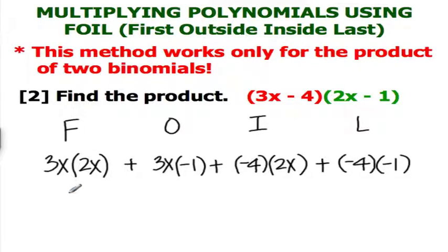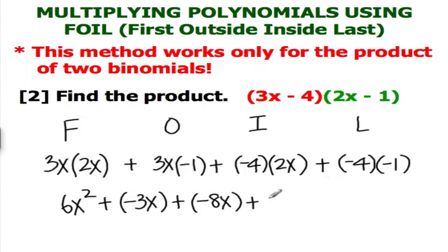From here, you just multiply 3x times 2x is 6x squared, plus the product here is negative 3x, plus the product here is negative 8x, and the last product here is 4.